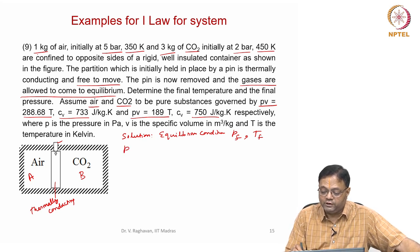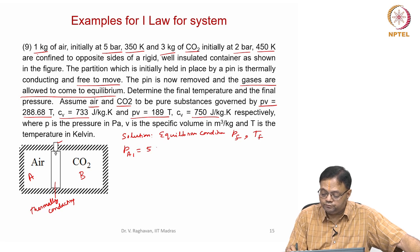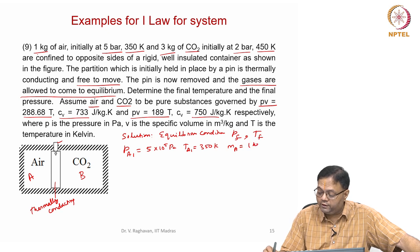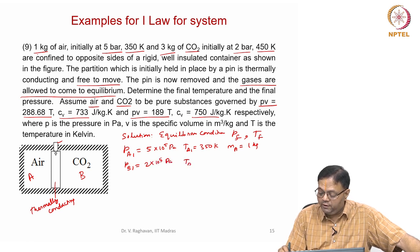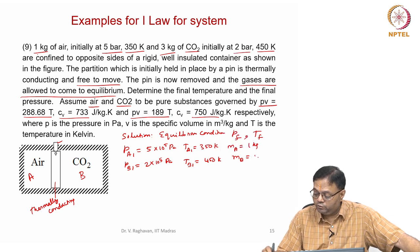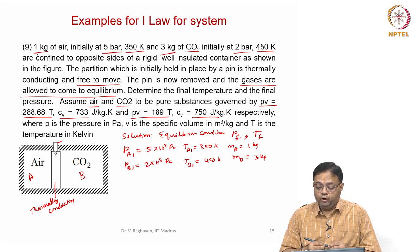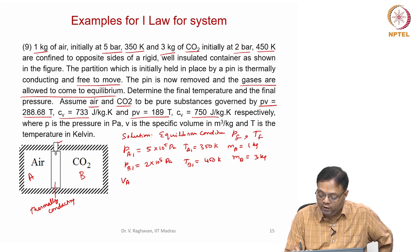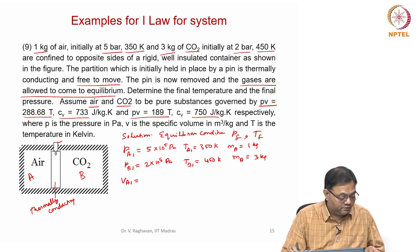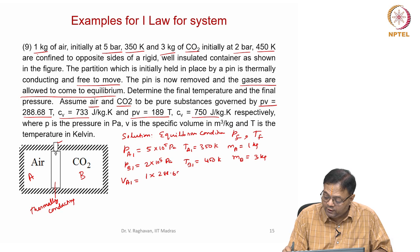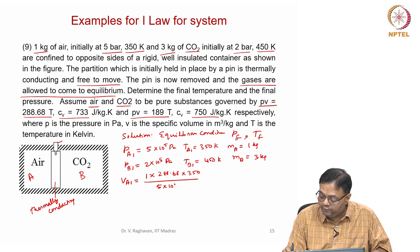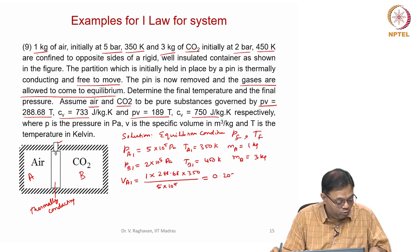Initial conditions: Pa1 = 5 bar, Ta1 = 350 K, mass of A = 1 kg. Pb1 = 2 bar, Tb1 = 450 K, mass of B = 3 kg. Calculate Va1 = 1 × 288.68 × 350 ÷ (5 × 10⁵) = 0.20207 m³.